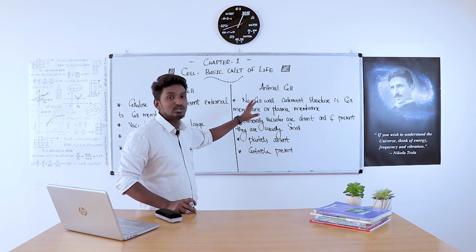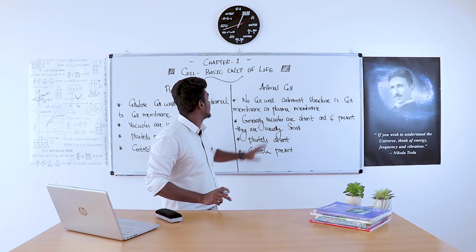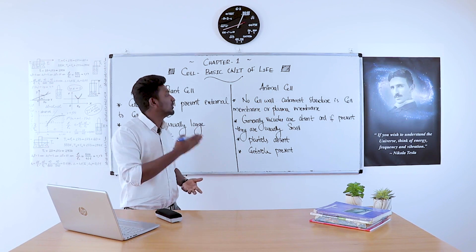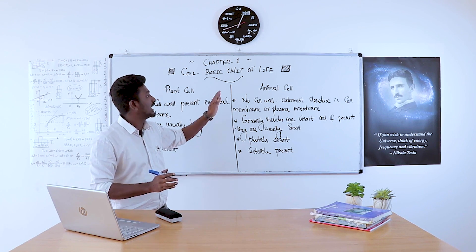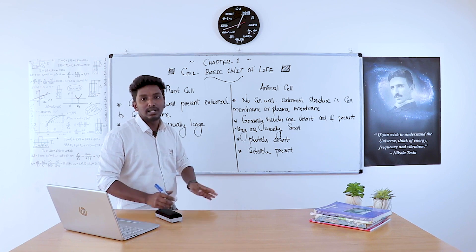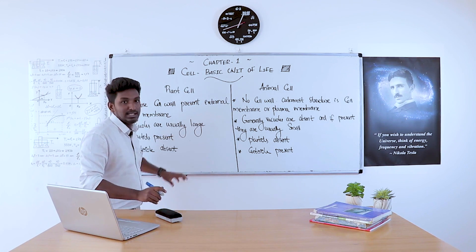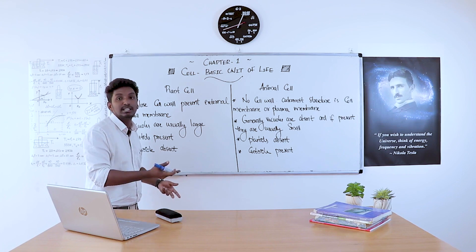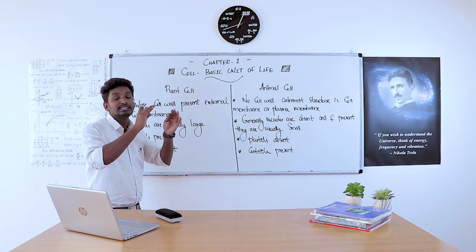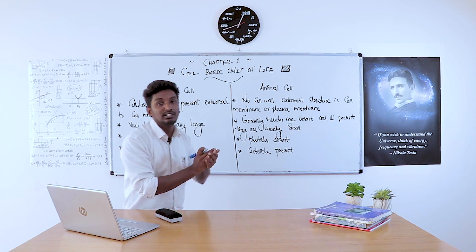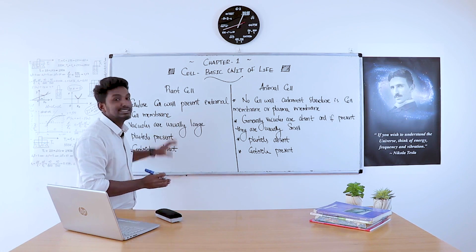For an animal cell, the outermost structure is called the cell membrane or plasma membrane. So the first basic difference is that animal cells have only a cell membrane or plasma membrane, but for a plant cell, in addition to the plasma membrane, there is an additional cover made up of cellulose — that is the cell wall.